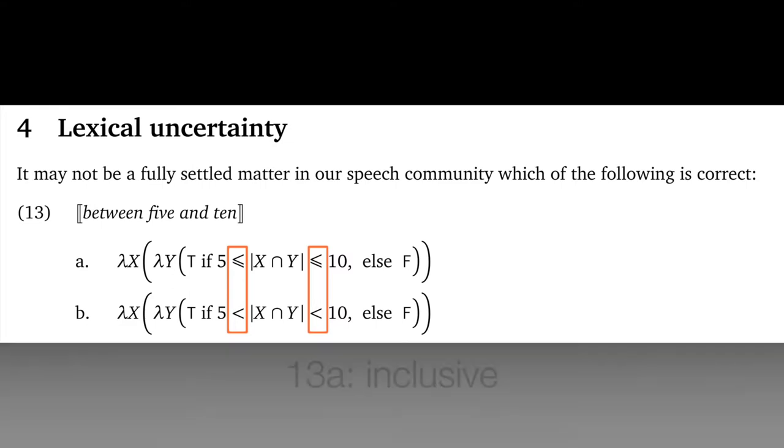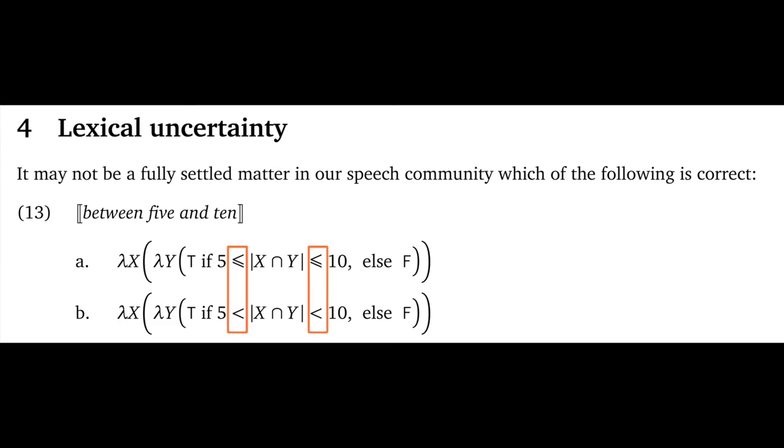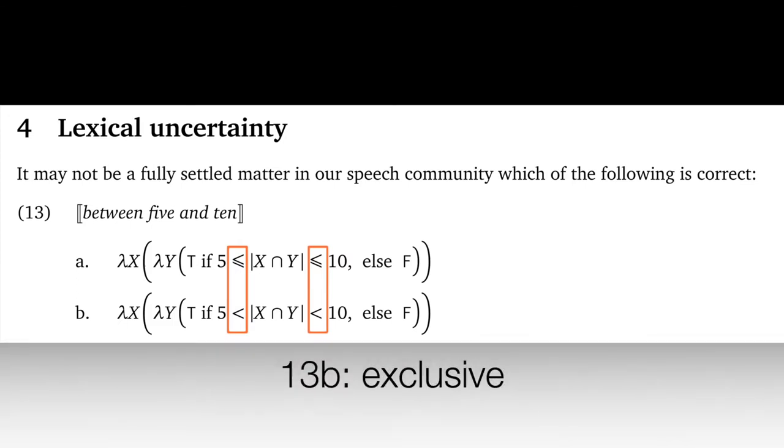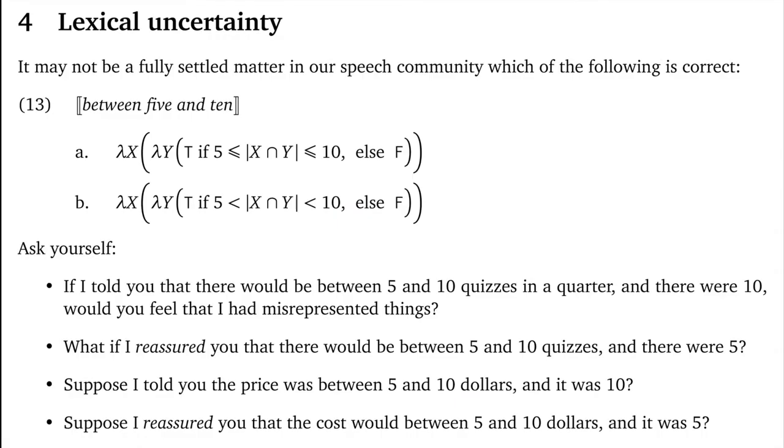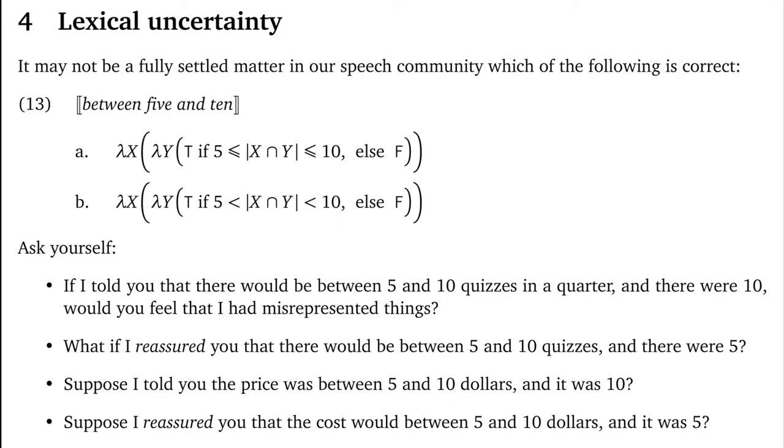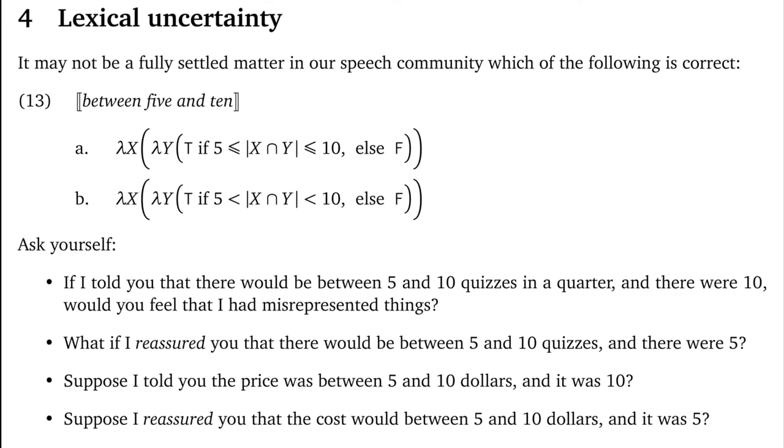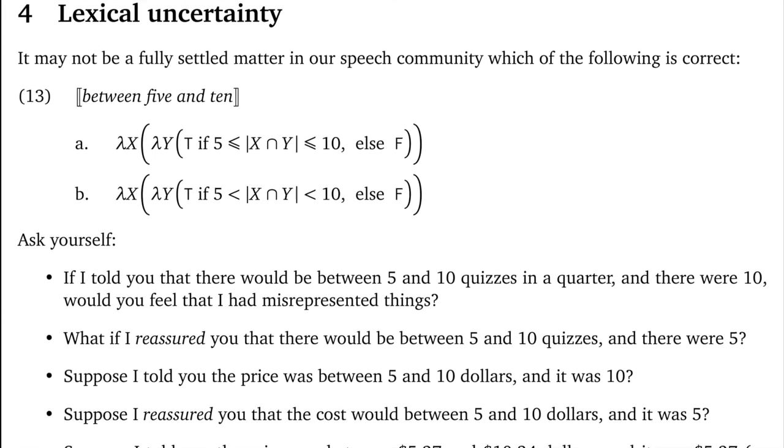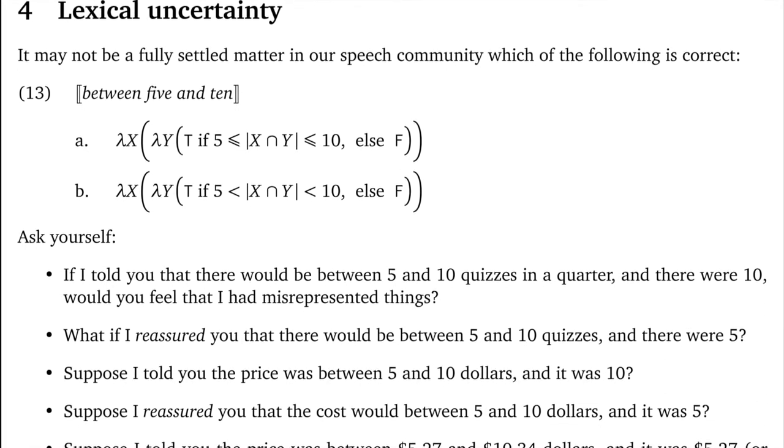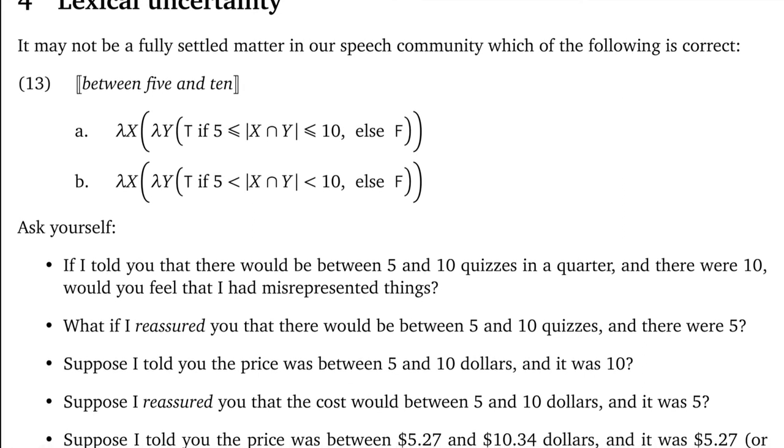In 13a, we have what you might call an inclusive reading because it includes five and ten, the two bounds. In 13b, we have an exclusive reading, a reading that excludes the bounds five and ten. So, what are your intuitions? If I told you that there would be between five and ten quizzes in a quarter and there were ten, would you feel that I had misrepresented things? What if I assured you that there would be between five and ten quizzes and there were five? Or what if I promised myself to have between five and ten quizzes and I managed to get out only five?